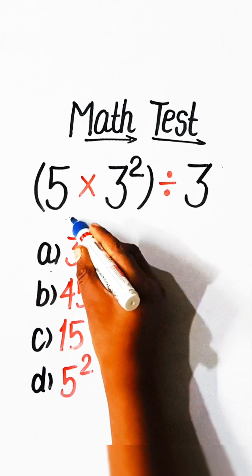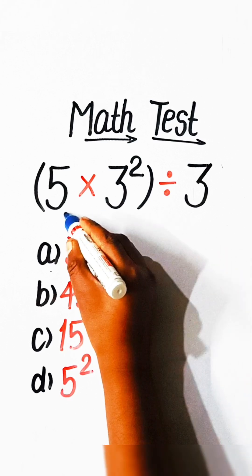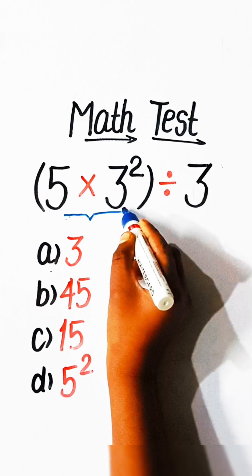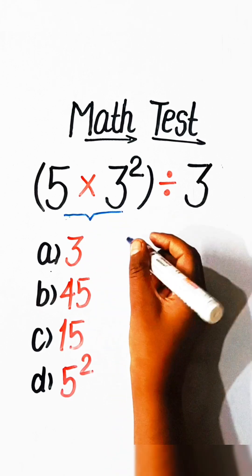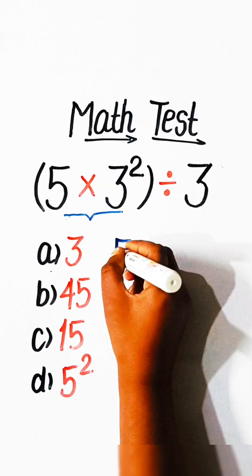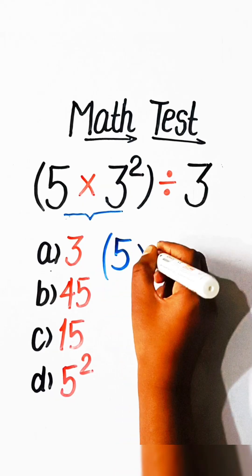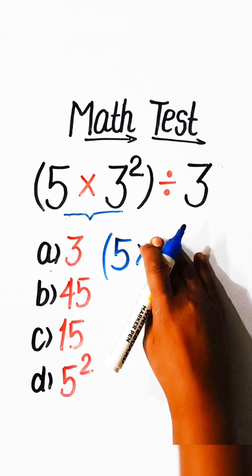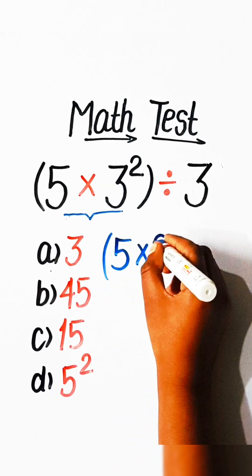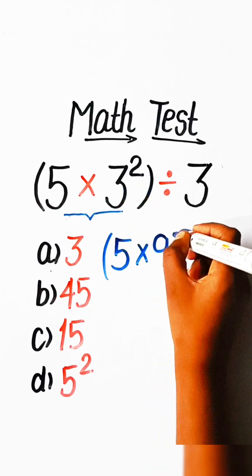So in order to solve this, we have to solve the bracket part first. So we will write here: 5 multiplied by 9, since 3 squared is 9, divided by 3.